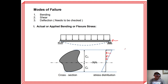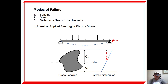For a simply supported beam that deflects, the upper part is in compression while the lower part below the neutral axis is in tension. Compressive stress increases uniformly from zero at the neutral axis to a maximum at the outermost upper part. The lower portion in tension similarly goes from zero at the neutral axis to a maximum value at the outermost fiber.